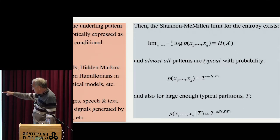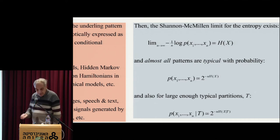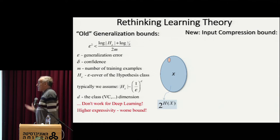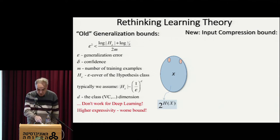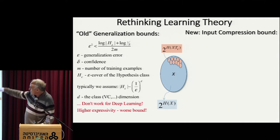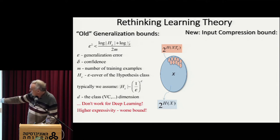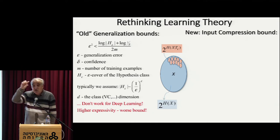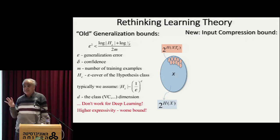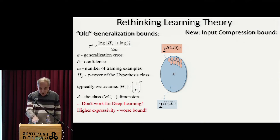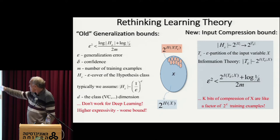If I assume both of these things are true, I can actually estimate the cardinality of this compressed representation. The total number of typical patterns is exponential in the entropy, and the average size of each of these cells induced by the layers is exponential in the conditional entropy. Therefore the size of the partition T-epsilon is precisely asymptotically two to the H(X) minus H(X given T), which is two to the mutual information.